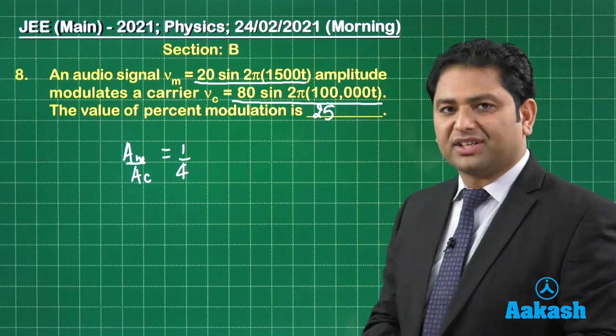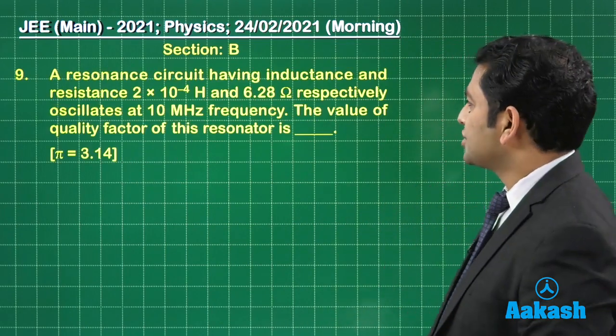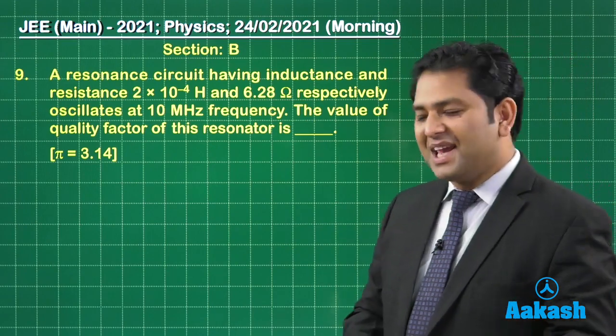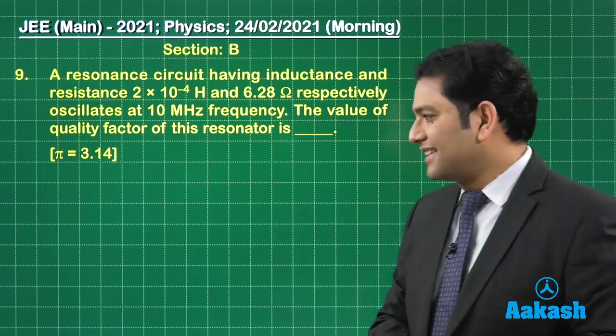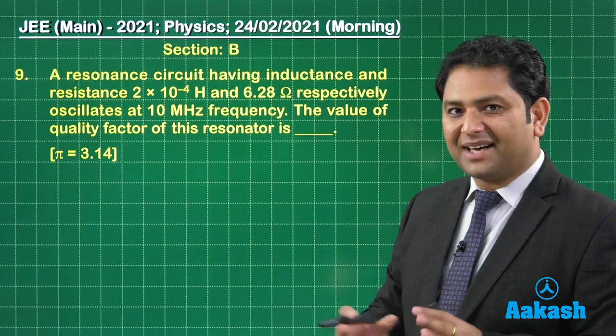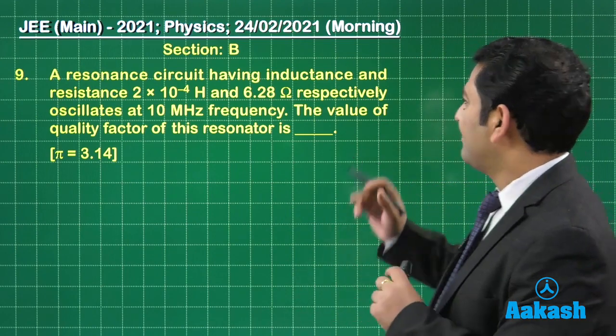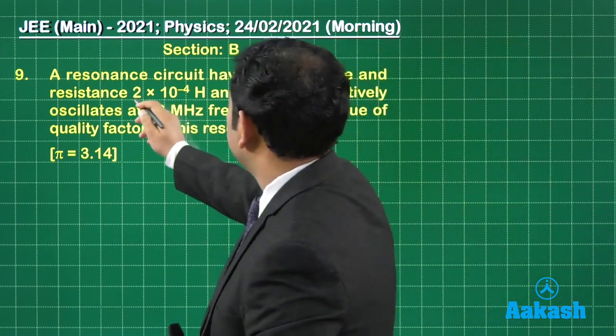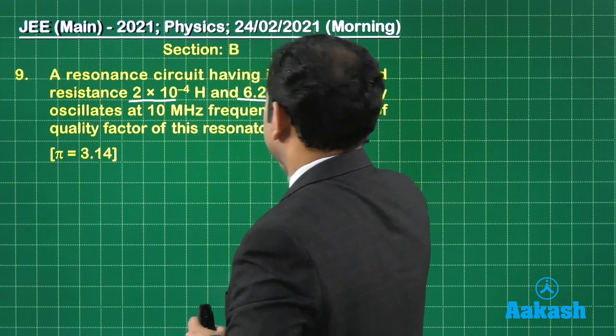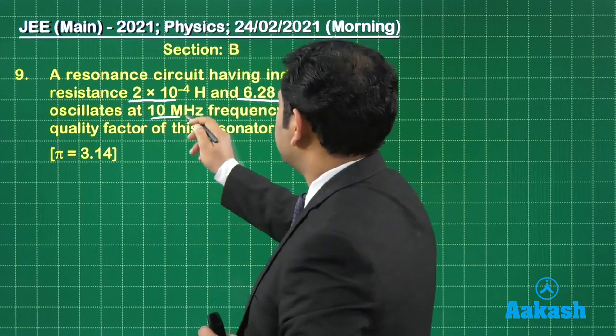Ninth question, let's see. Question number nine, now that's from AC and the quality factor that has been asked. So the value of inductance is given, the value of resistance is given, the frequency is given.